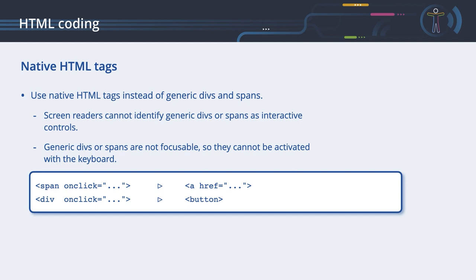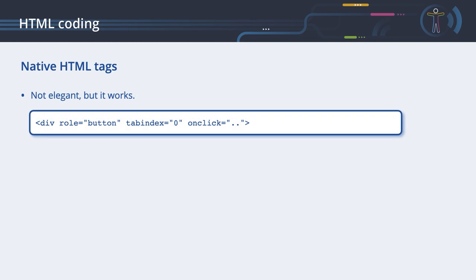HTML5 elements and landmark roles. Several HTML5 sectioning elements automatically create ARIA landmark regions. The header element includes the banner role when in the context of the body element. The nav element includes the navigation role. The main element includes the main role and should only be used once per web page. The footer element includes the contentinfo role in the context of the body element. The aside element includes the complementary role. The form element includes the form role when it has an accessible name. The section element includes the region role when it has an accessible name. Always use native HTML tags instead of generic divs and spans, as screen readers cannot identify generic divs or spans as interactive controls. Generic divs or spans are also not focusable, so they cannot be activated with the keyboard, though you can re-establish focusability by adding a tabindex value.